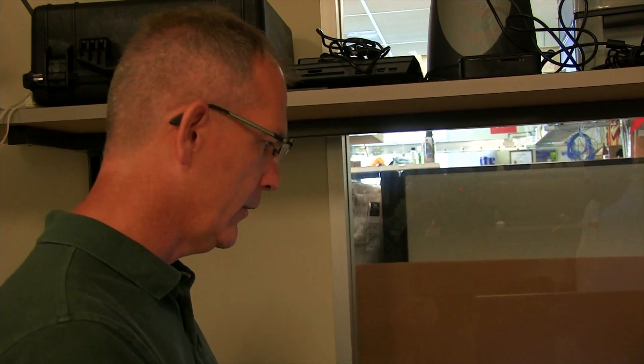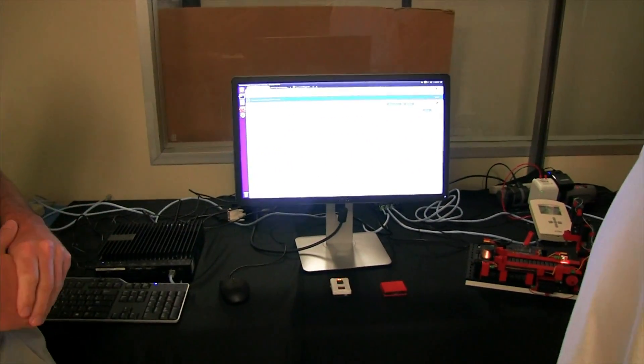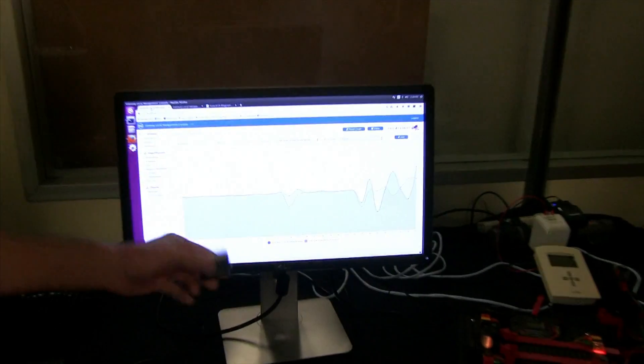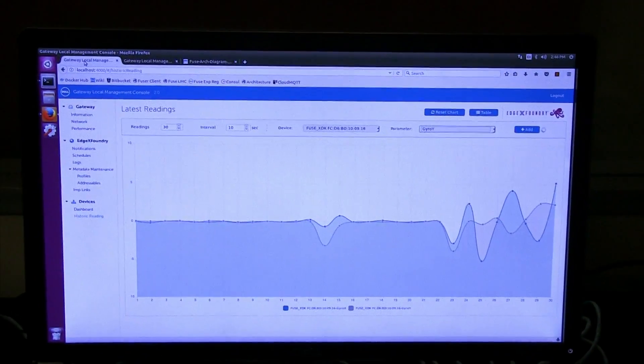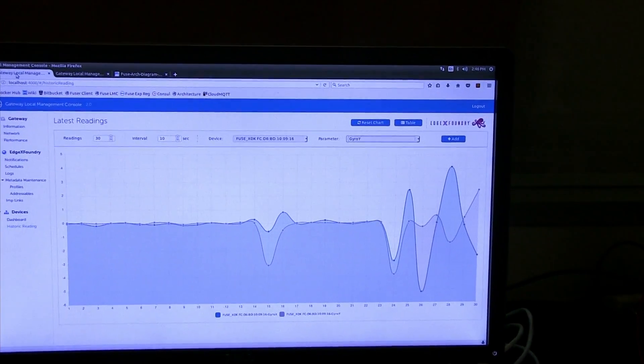If you can't control things at the edge, it's too much data and too slow for reaction. Right here we're seeing a visual graphic of the data coming off the gyroscope in this Bosch sensor - you're seeing the ups and downs. In fact, we always have fun with those sensors. We throw them around the room and you get big spikes.